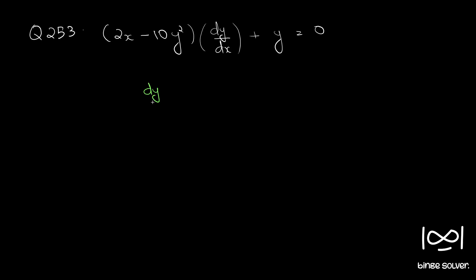dy/dx = -y/(2x - 10y²). As you can see, there is one x and many y terms. So that gives an indication: dx/dy.